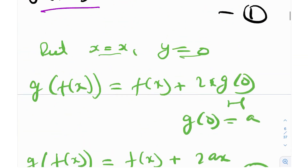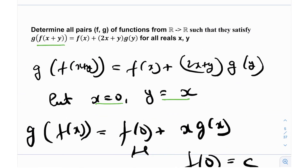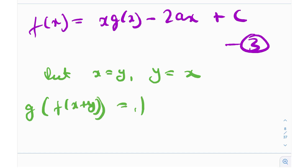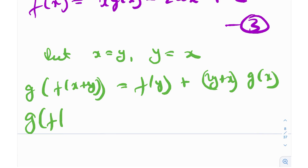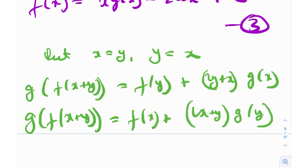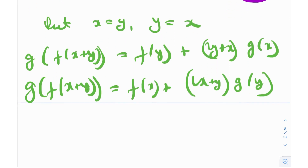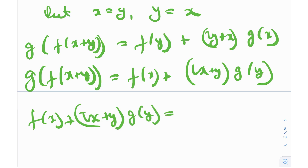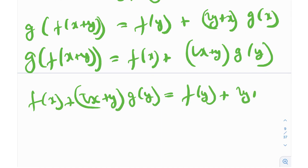Now, if you notice in the functional equation, the left hand side has x plus y, which is symmetric. So whenever you have that, what you can do is plug in x equals y and y equals x — swap them. You'll get g of f(x+y) on the left, and on the right you'll get f(y) plus (2y+x) times g(x). The original was g of f(x+y) equals f(x) plus (2x+y) times g(y). Left hand sides are the same, so you can equate the right hand sides, giving: f(x) plus (2x+y) times g(y) equals f(y) plus (2y+x) times g(x).